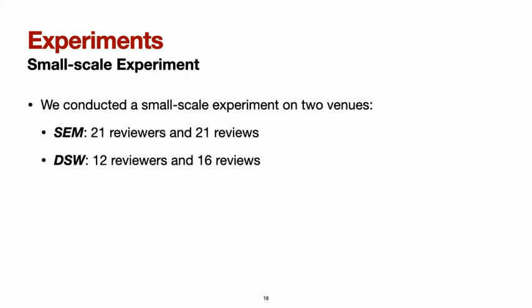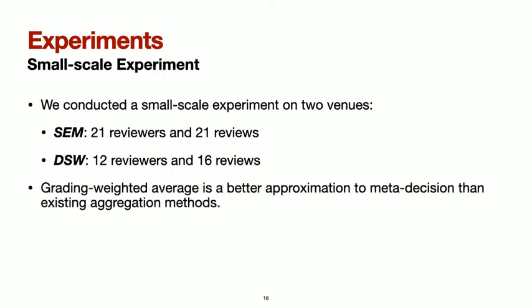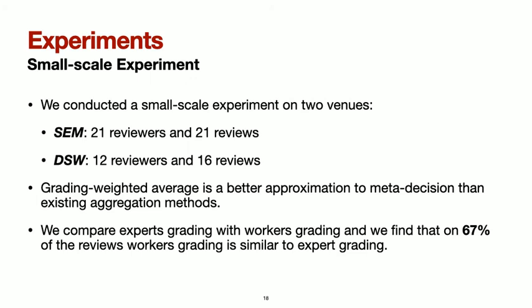In our experiments, we conduct a small-scale and a large-scale experiment. For the small-scale experiment, we collect data from two venues: Semantics 2019, where we contacted 21 reviewers who each provided one review, and the Workshop on Decentralizing the Semantic Web on Open Review, where 12 reviewers collectively provided 16 reviews. We find that grading weighted average is a better approximation to meta-decision than existing aggregation methods such as score average or confidence-weighted average. We also find a large overlap of 67% between workers' grading and experts' grading.